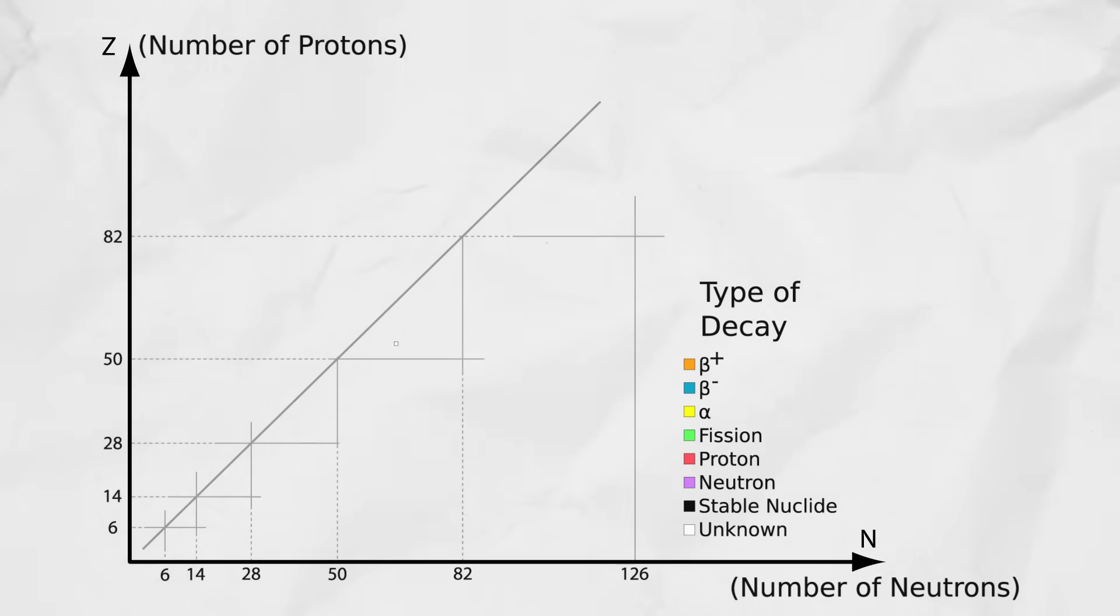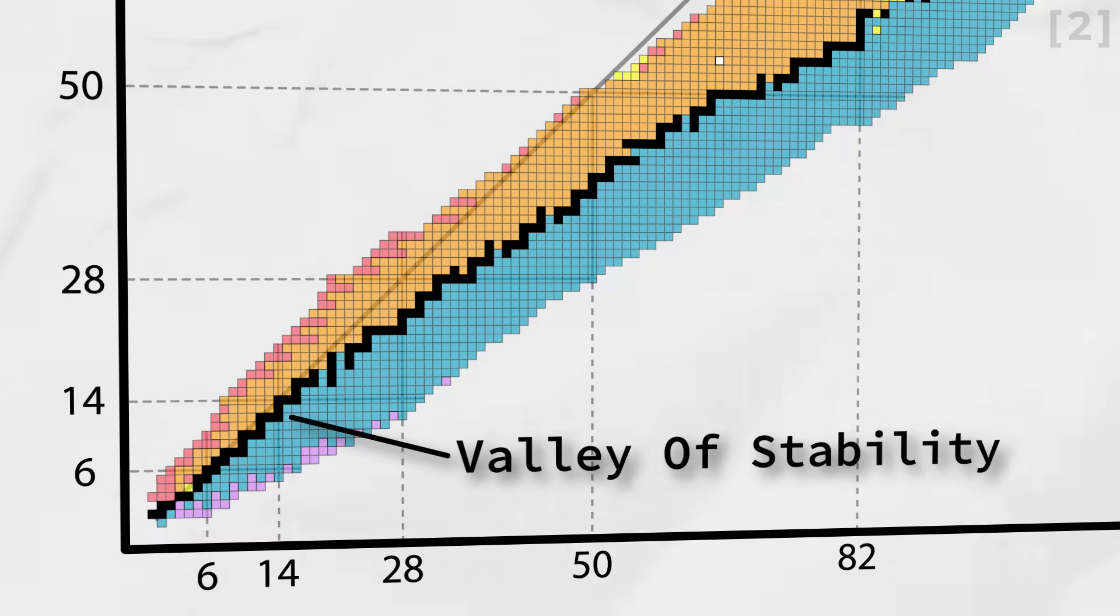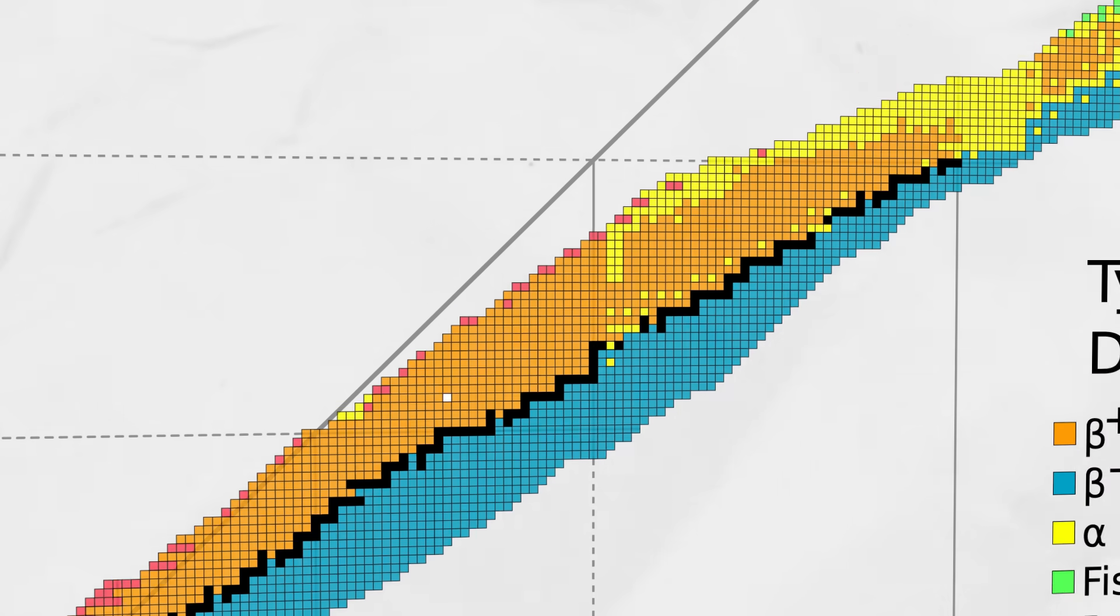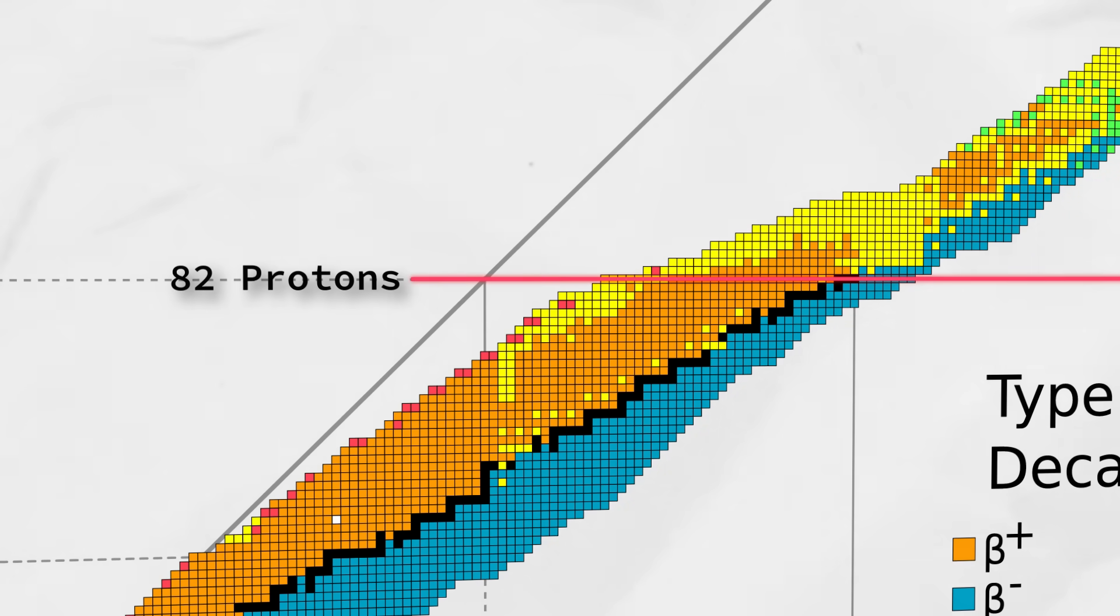Each square in this graph is a different isotope of every element we've ever discovered. This black line shows all of the isotopes that are stable. This is called the valley of stability, and every other isotope is radioactive in one way or another. But why does the valley end after elements have more than 82 protons?